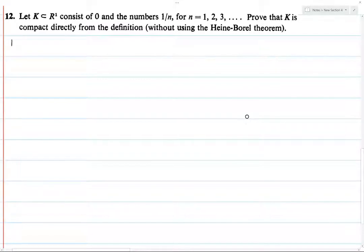So let fancy U, we'll call this U alpha, be an open cover of K. We need to find a finite subcover.